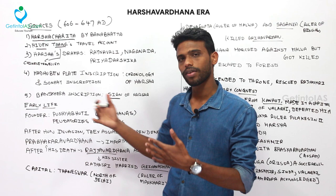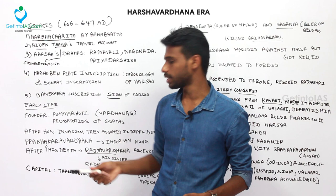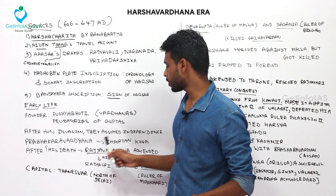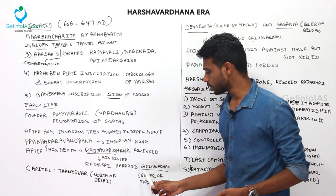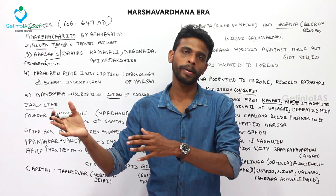Prabhakar Vardhana assumed the throne after his father's death, and his son was Rajya Vardhana. After Prabhakar Vardhana's death, Rajya Vardhana ascended the throne. Once he ascended the throne he faced many challenges. His sister Rajyashri was married to Grahaverman, who was the ruler of Maukharis. Their capital was Thaneshwar, located north of Delhi.